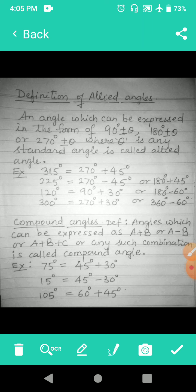For example, 75 degrees is 45 degrees + 30. 15 degrees is 45 - 30. And 105 is 60 + 45.